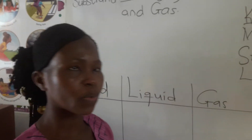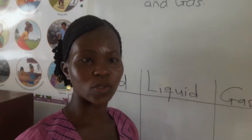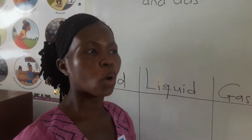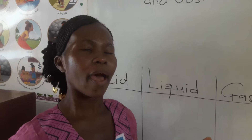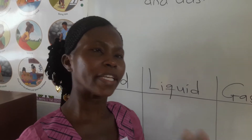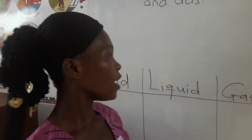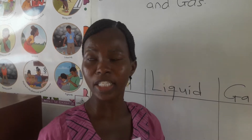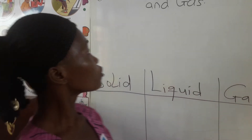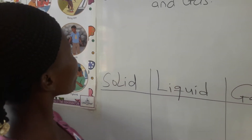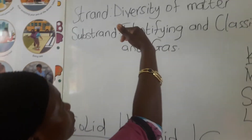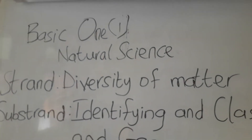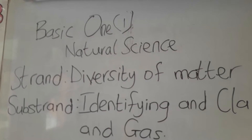Last week we talked about what climate conditions were, and we saw that there are four conditions. We also saw some activities done under each condition. Today we are going to talk about diversity of matter.